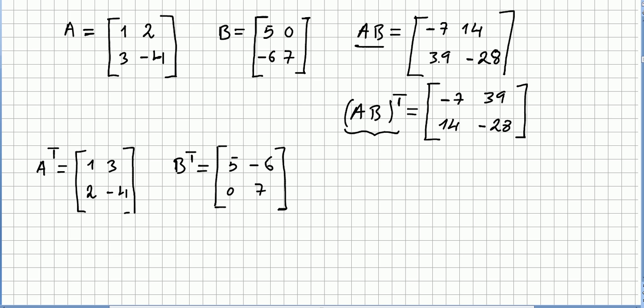So that will be -7, 39, so the column will be a row: -7, 39, 14, -28.